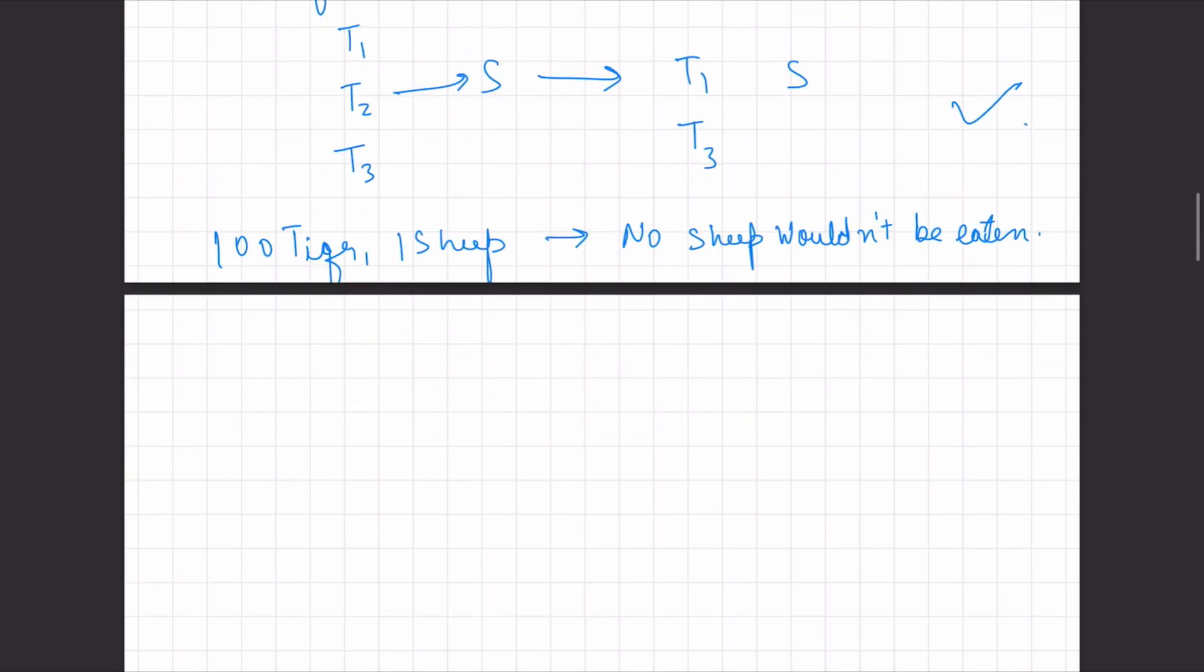And basically, if you have to extrapolate this, for n number of tigers, if n is odd, n is the number of tigers. If n is odd, and let's say there's just one sheep all the time, then the sheep would be eaten. And if it's even, it is not eaten.